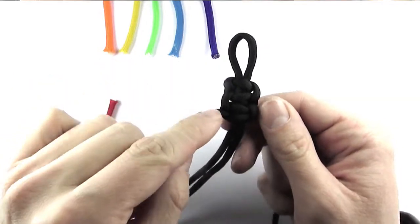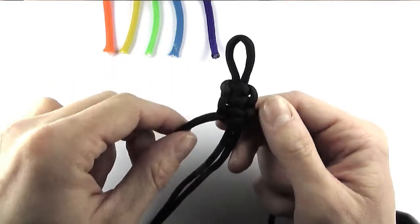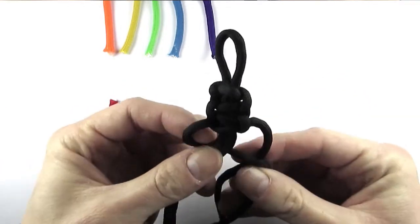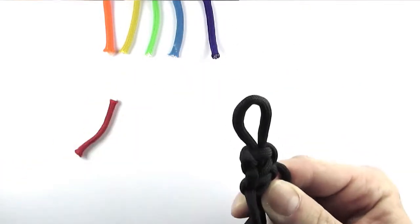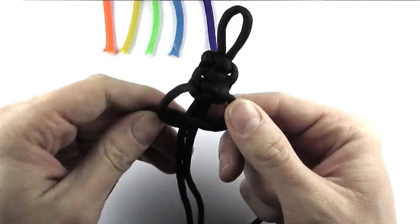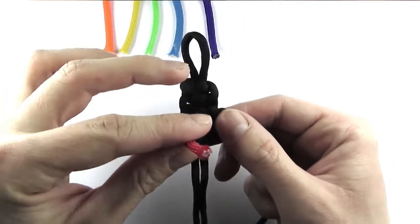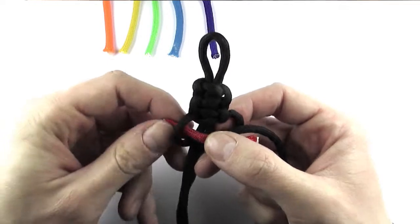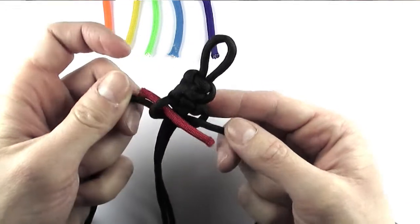I make another cobra knot and before I tighten it I insert an end of the cord into it. As you can see I'm only inserting it onto one side where the knot is tied.